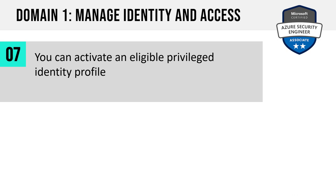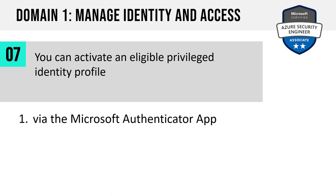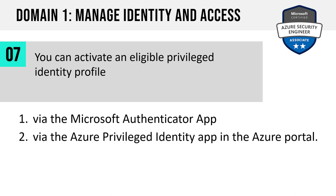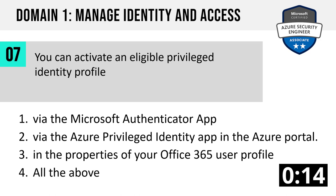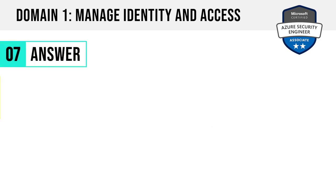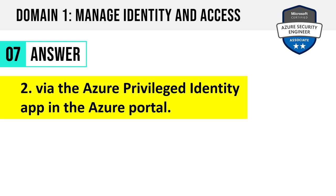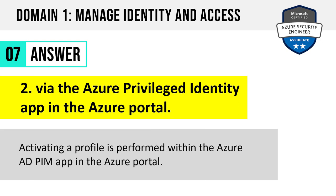Question 7. You can activate an eligible privileged identity profile via the Microsoft Authenticator app, via the Azure Privileged Identity app in the Azure portal, in the properties of your Office 365 user profile, or all of the above. The answer is two: via the Azure Privileged Identity app in the Azure portal. Activating a profile is performed within the PIM app in the portal. End of story.